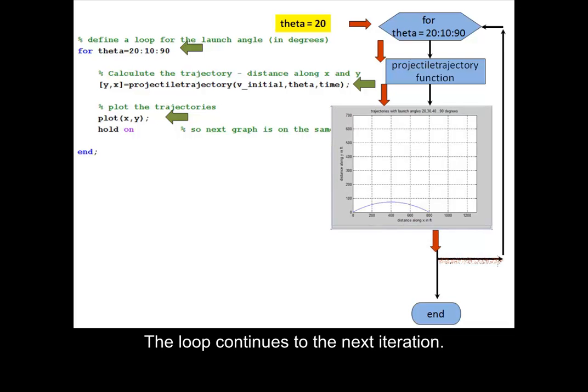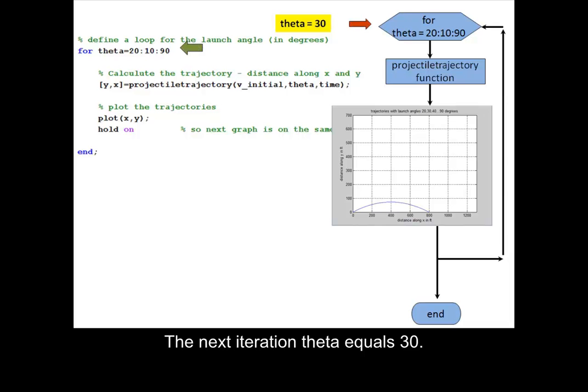The loop continues to the next iteration. The next iteration, theta equals 30. Call the function projectile trajectory.